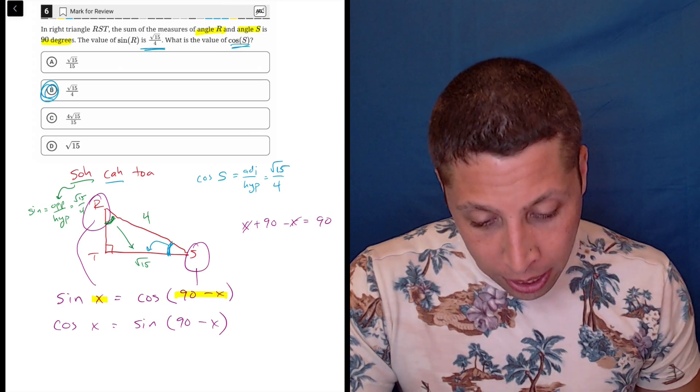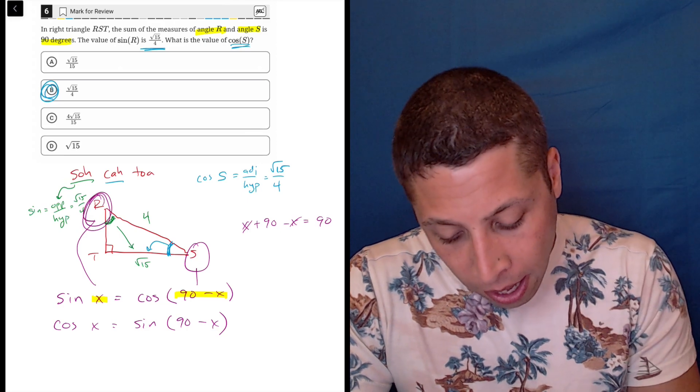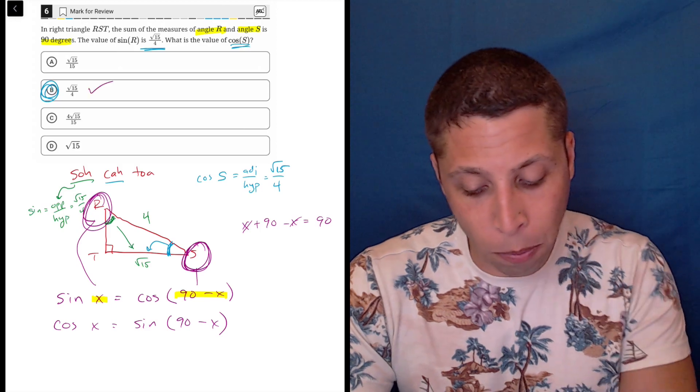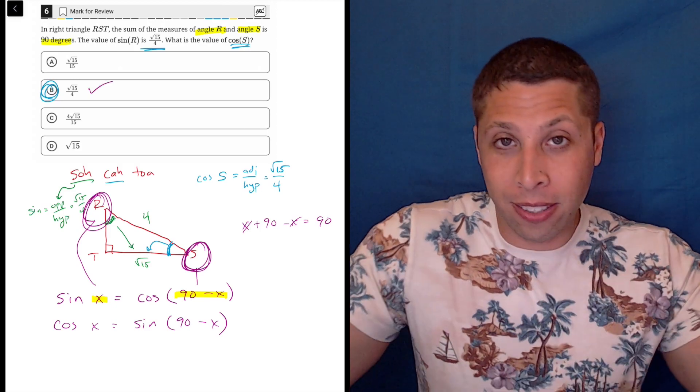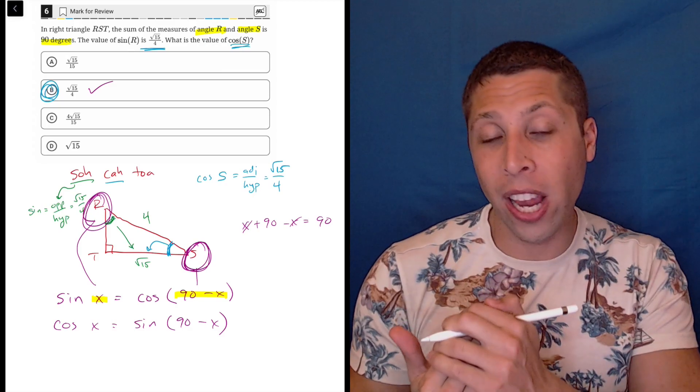In this case, if we said that sine of R is radical 15 over 4, that's the sine of this angle, then the cosine of the other is going to be the same thing. So this is just proving what we did the long way, that they're the same value. Again, because the opposite of one angle is the adjacent for another.